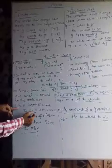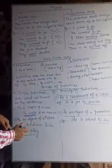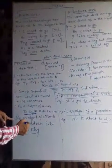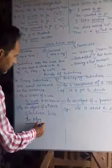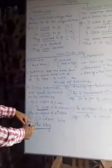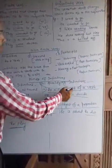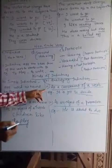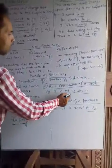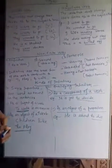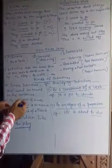As an object of a transitive verb — for example, 'Children like to play.' 'To play' is an object here. Children like what? To play. So 'to play' is an object. As a complement of a verb — simple infinitive may be a complement of a verb. For example, 'It is yet to decide.' 'To decide' is a complement, and it is a simple infinitive.